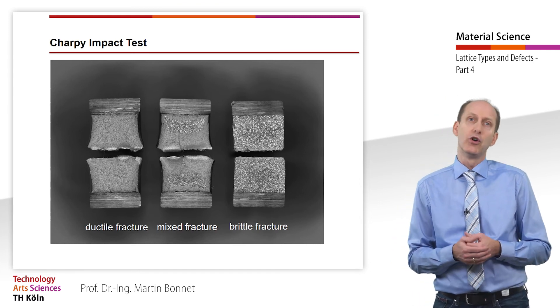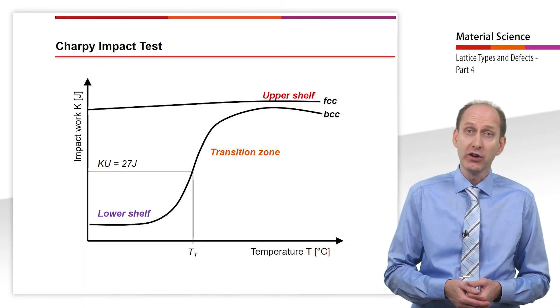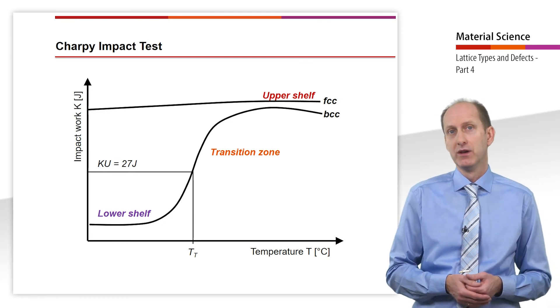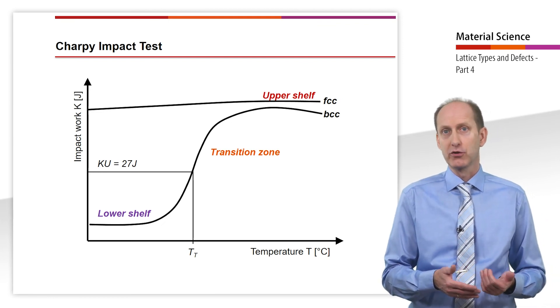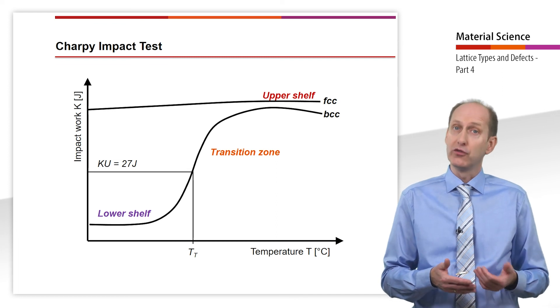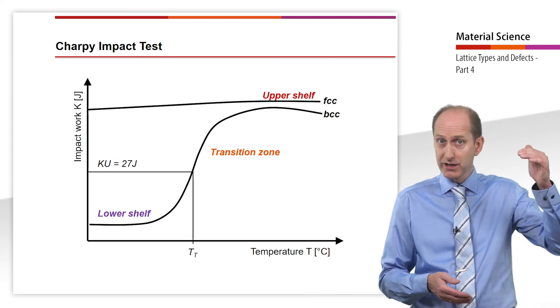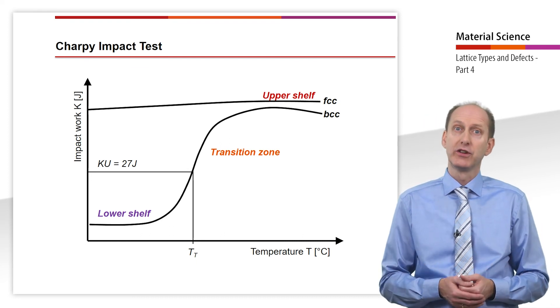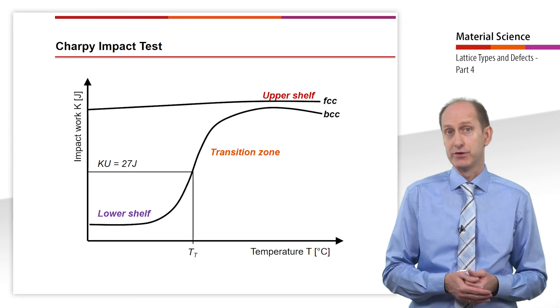Since notch bar impact work strongly depends on the temperature, the measured values are plotted against the temperature. The energy absorbed temperature curve can be divided into three sections: upper shelf, transition zone, and lower shelf. The upper shelf shows a good toughness at high temperatures.